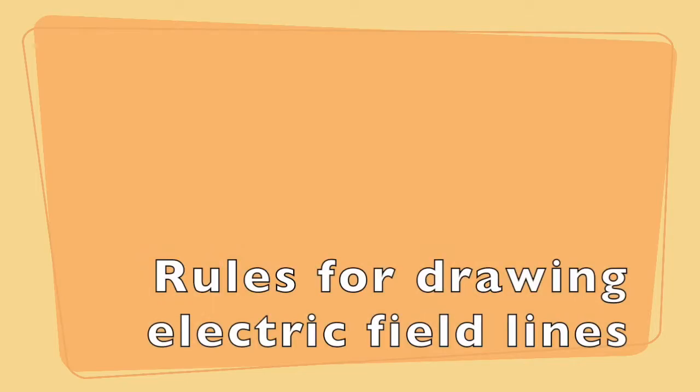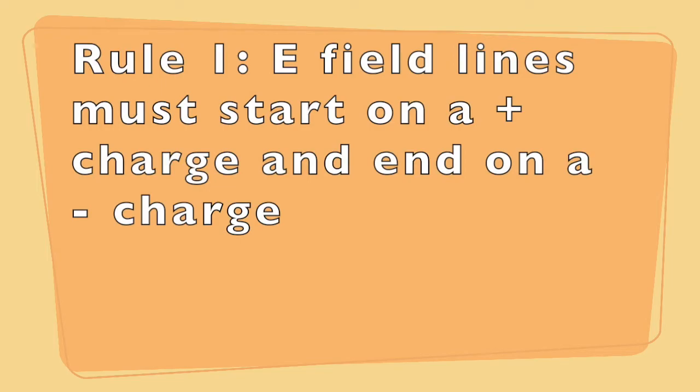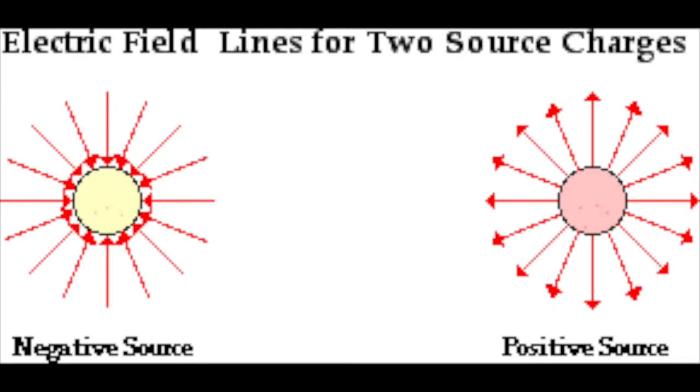Now if we want to draw electric field lines, it turns out if there are a few simple rules that we follow, we can get some pretty realistic pictures that are useful for considering what the electric field is. The first rule is that electric field lines must start on a positive charge and end on a negative charge. This matches up with our basic intuition that the field always goes away from positive charges and towards negative charges, because that gives the direction that a positive charge would feel a force.